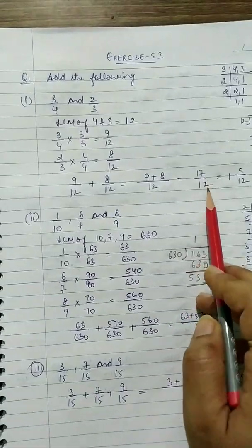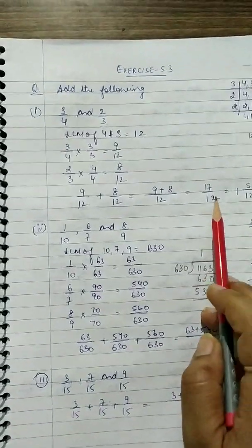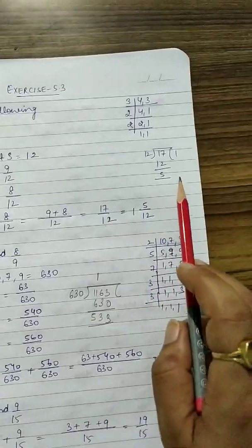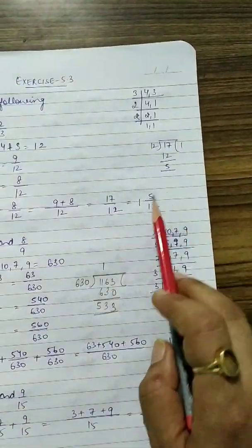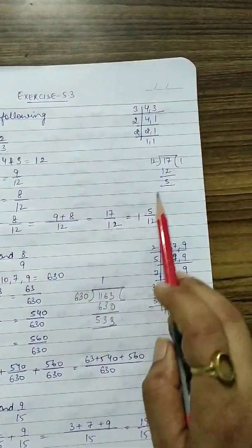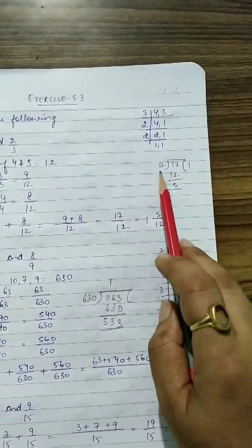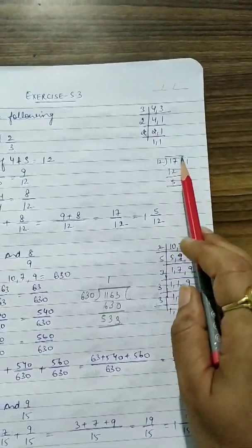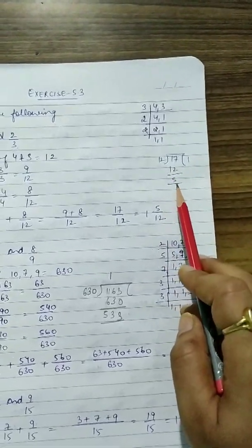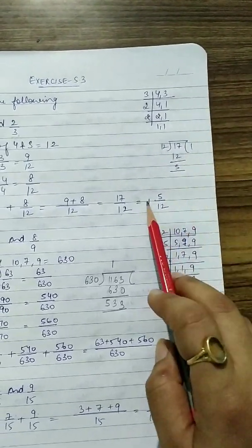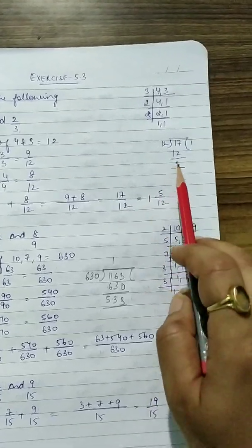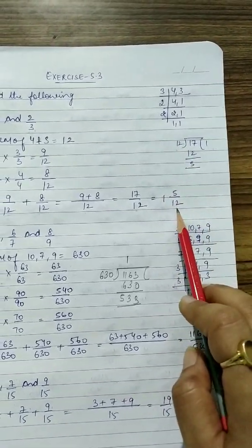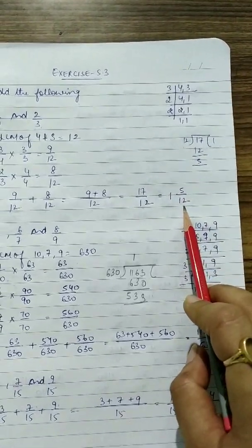...17/12. Now this is an improper fraction, so convert it into a mixed fraction. When I divide 17 by 12, 12 ones are 12 and the remainder is 5. So the answer is 1 and 5/12.